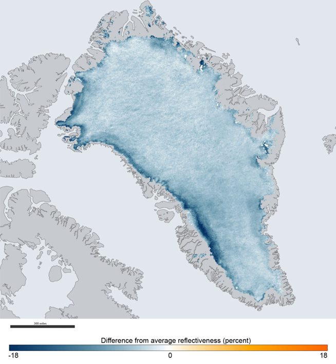On the ice sheet, temperatures are generally substantially lower than elsewhere in Greenland. The lowest mean annual temperatures, about −31 degrees Celsius, occur on the north-central part of the North Dome, and temperatures at the crest of the South Dome are about −20 degrees Celsius.